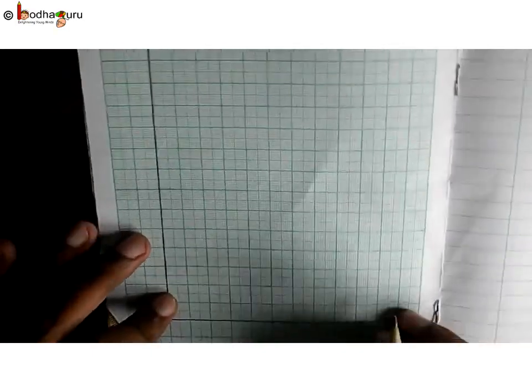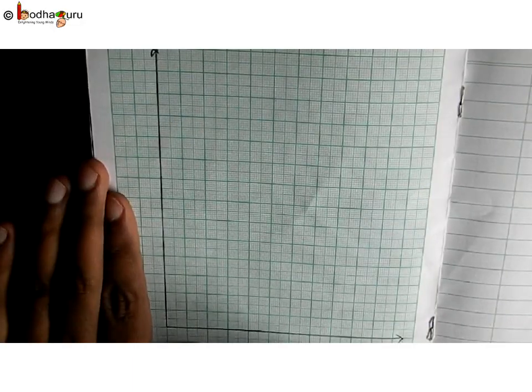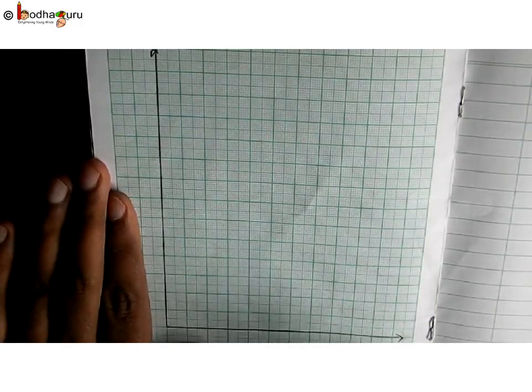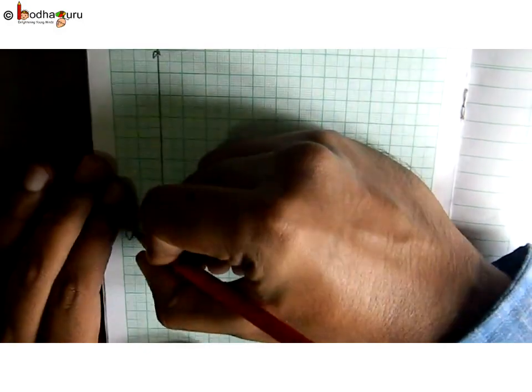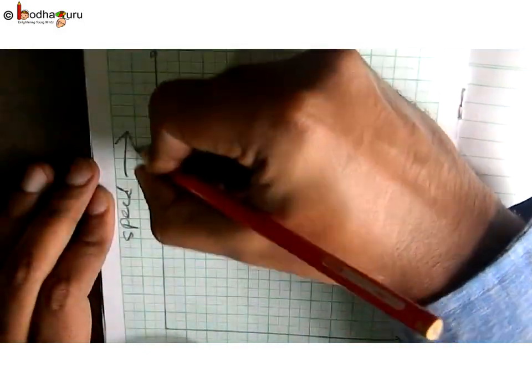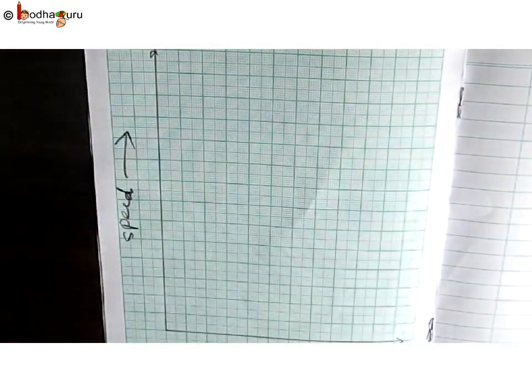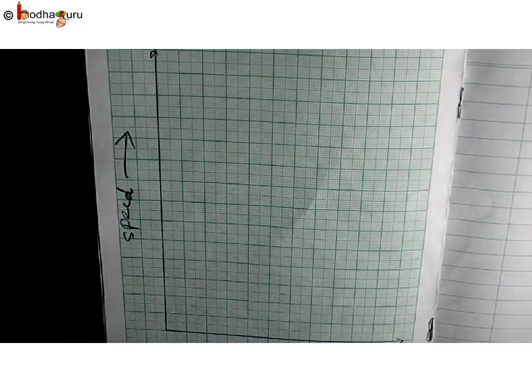If we consider the value of the side of the bigger square as one unit, then y-axis would be too long. At least 45 units long, so 45 squares required. As we need to show speed up to 45 km.